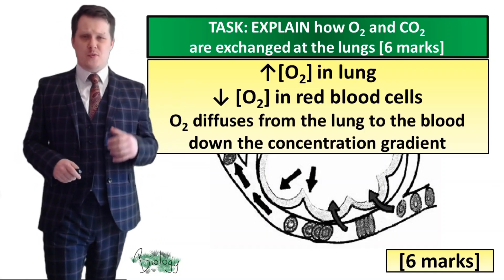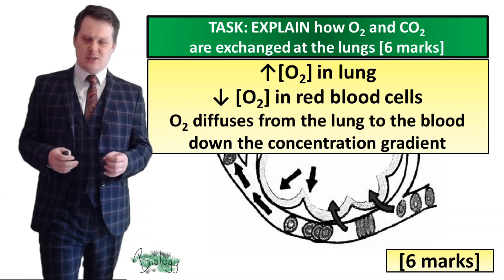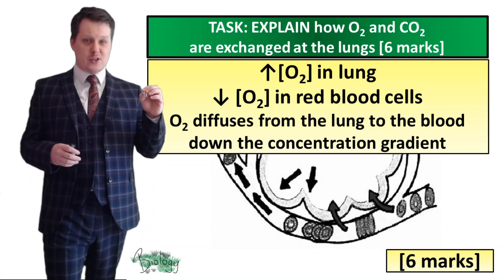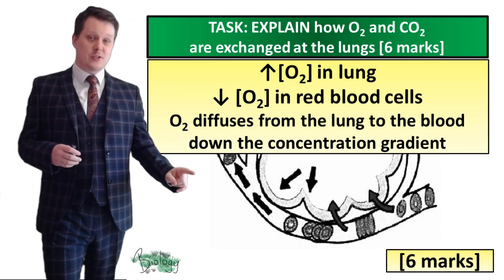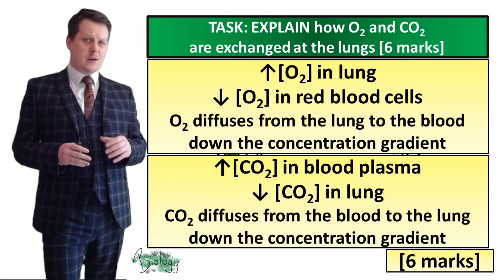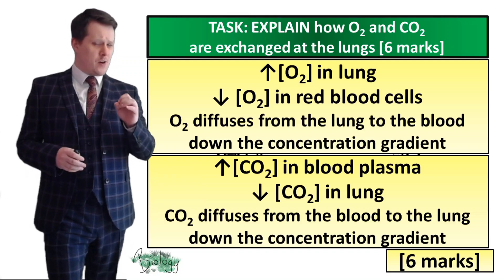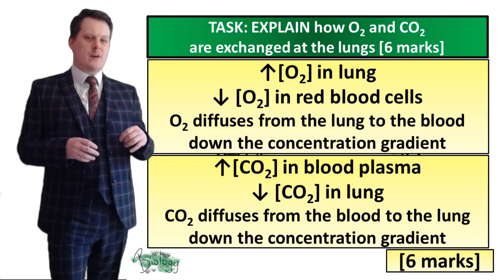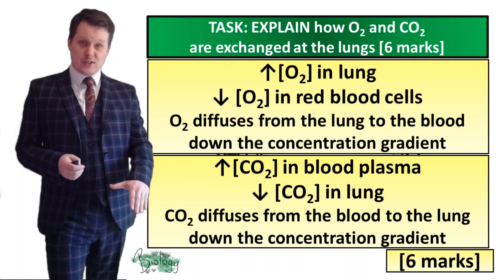Let's start with oxygen. When you breathe in, there is an increased concentration of oxygen in the lung but a really low concentration of oxygen in the red blood cells, so oxygen diffuses from an area of high concentration in the lung to an area of low concentration in the red blood cells, down its concentration gradient. For carbon dioxide: there is a high concentration of carbon dioxide in the blood plasma but a low concentration in the lung — only 0.04% — so carbon dioxide diffuses from an area of high concentration in the plasma to an area of low concentration in the lung, down its concentration gradient.